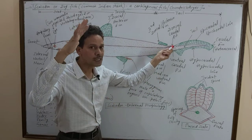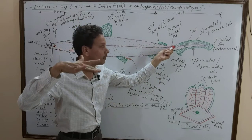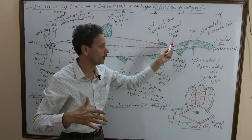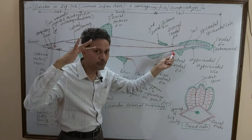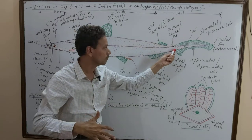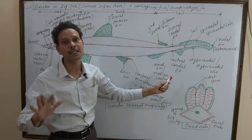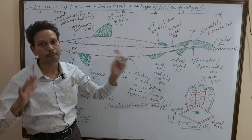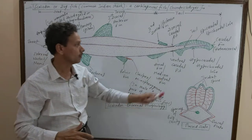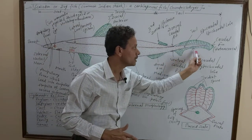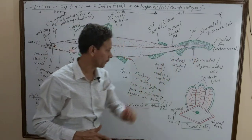The animal is a voracious feeder, it is carnivorous — it attacks prey like smaller fishes, mollusks, lobsters — just like a dog, that is why it is called dogfish. On the posterior ventral region, there is a median ventral fin — the anal fin. On the dorsal caudal region there is a dorsal caudal pit, and similarly a ventral caudal pit on the ventral side.